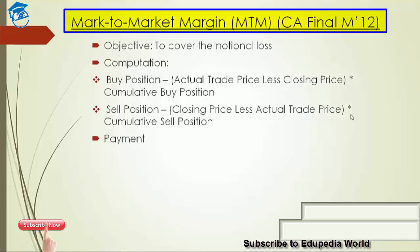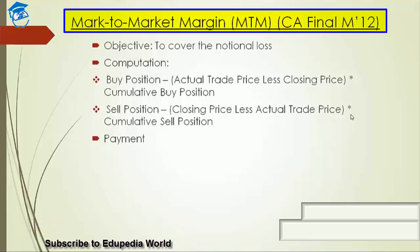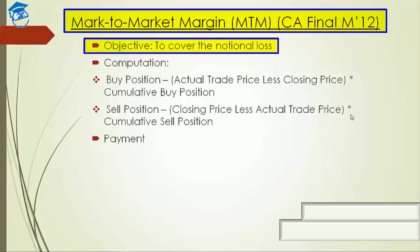Gross exposure margin, as the name suggests, is basically computed on the aggregate of the net cumulative outstanding position — the entire amount of purchase or the entire amount of sale — because it says it's gross, gross exposure margin of each security. Each exchange basically determines its own rate of gross exposure margin based on the kind of risk perception of that market, and other risk containment measures such as deposits and collaterals are taken. That's what is done in gross exposure margin.